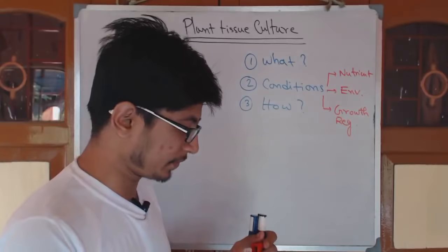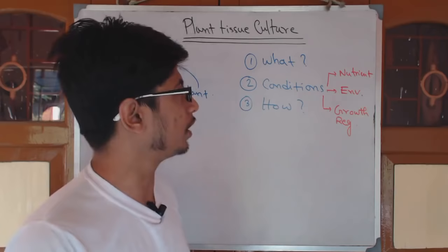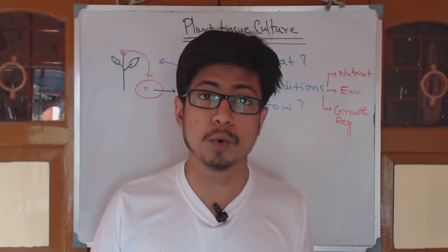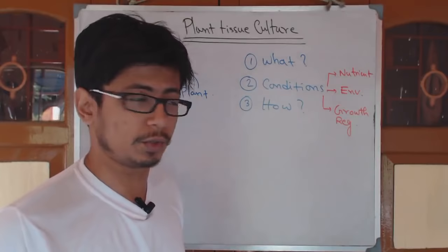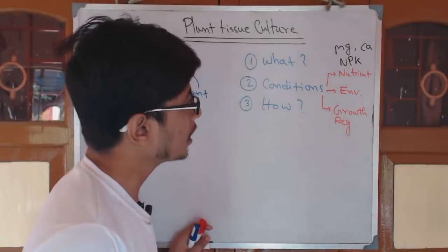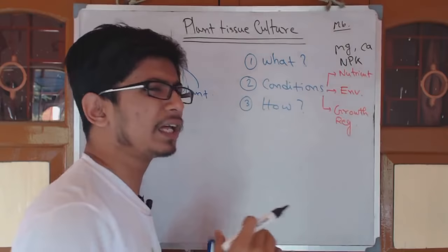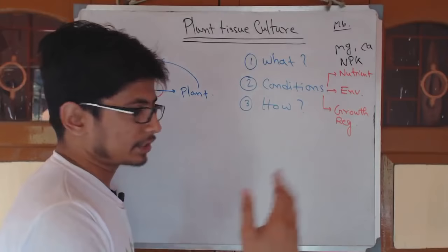Nutrients are obviously required for any organism to survive. Among the nutrients we have two different types: macronutrients and micronutrients. Macronutrients are the nutrients a plant requires in higher concentration to survive, while micronutrients are required in very small amounts. The most important nutrient sources are nitrogen, phosphorus, and potassium — known as NPK. Magnesium and calcium are also very important, while micronutrients include molybdenum and other minerals that help in secondary metabolite production.